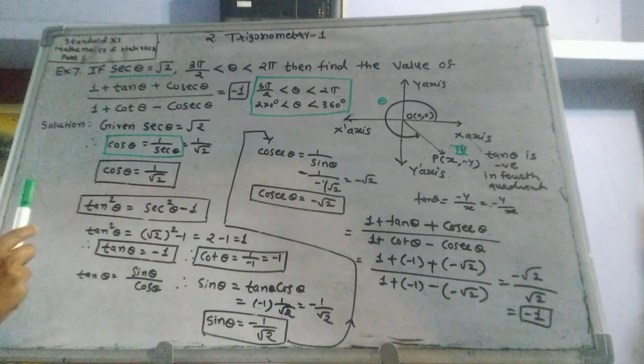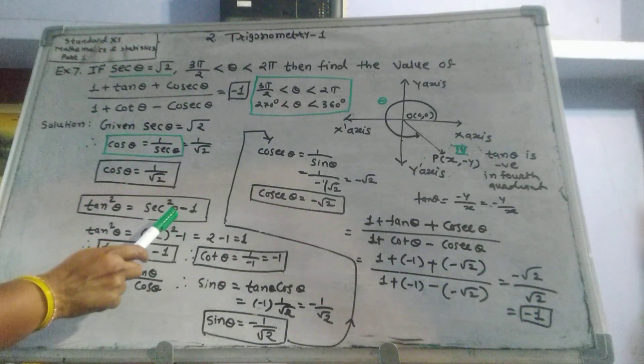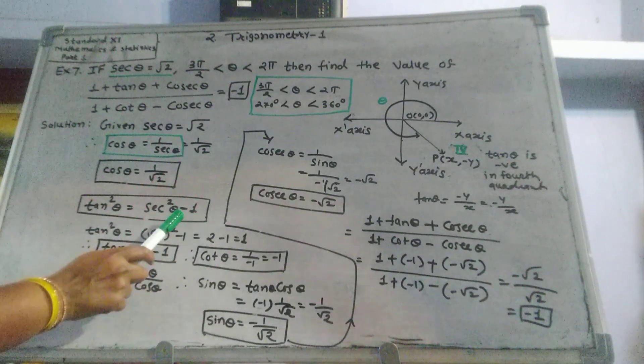Now here sec theta equals root 2, therefore cos theta equals 1 upon root 2. Tan square theta equals sec square theta minus 1, which is root 2 square minus 1.